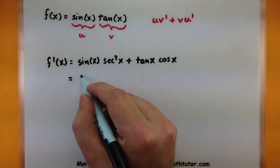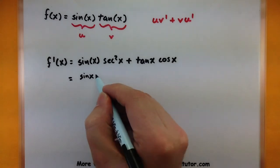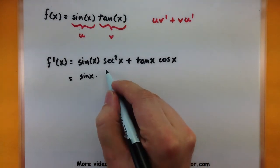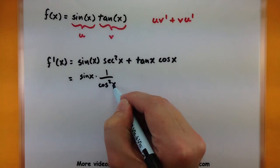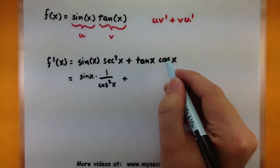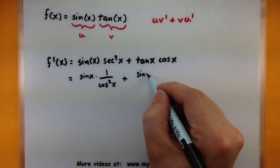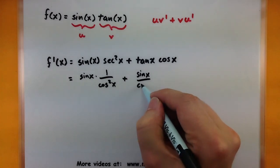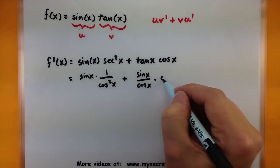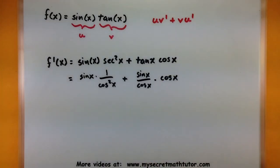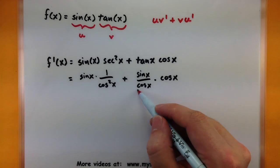So this would be sine of x multiplied by 1 over cosine squared of x, plus, this would be sine of x all over cosine of x, multiplied by cosine of x. So I guess we don't have a whole lot in here that we could cancel, but we can actually get rid of these cosines.